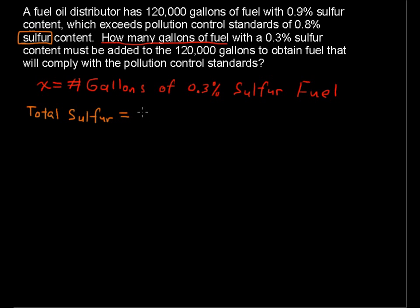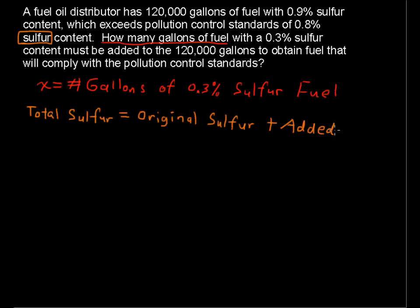The total sulfur will equal the amount in the original — the original sulfur, which is the amount of sulfur that was in the 120,000 gallons. To that original sulfur, we're going to add some sulfur. And I know we're adding fuel, but you'll see in the equation why I'm writing it in terms of sulfur for the mixture problems.